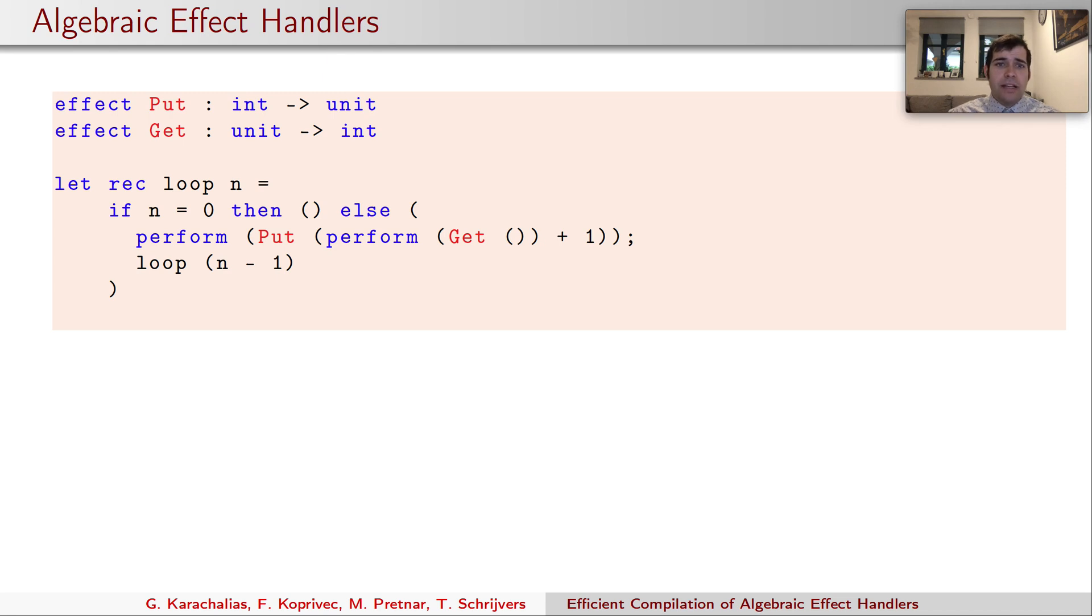Algebraic effects can be thought of as resumable exceptions, though in fact they are much more powerful. Let's see them through a simple loop example. We first declare two effects: put that takes an integer parameter and returns unit, and get that takes a unit parameter and returns int.